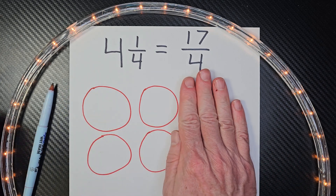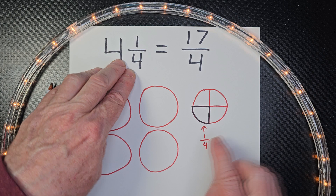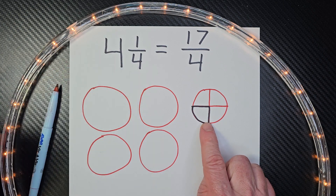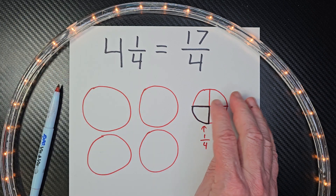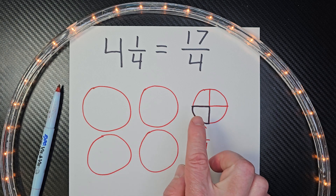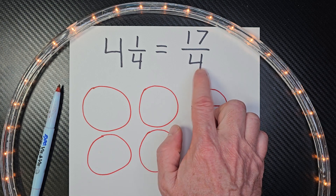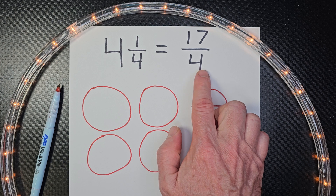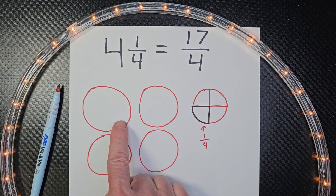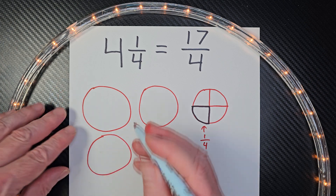I have four apple pies, and then one-fourth of an apple pie that I ate — I was sure hungry. To get a better understanding of this number right here — this is an improper fraction — let's take these apple pies and divide them into four pieces.